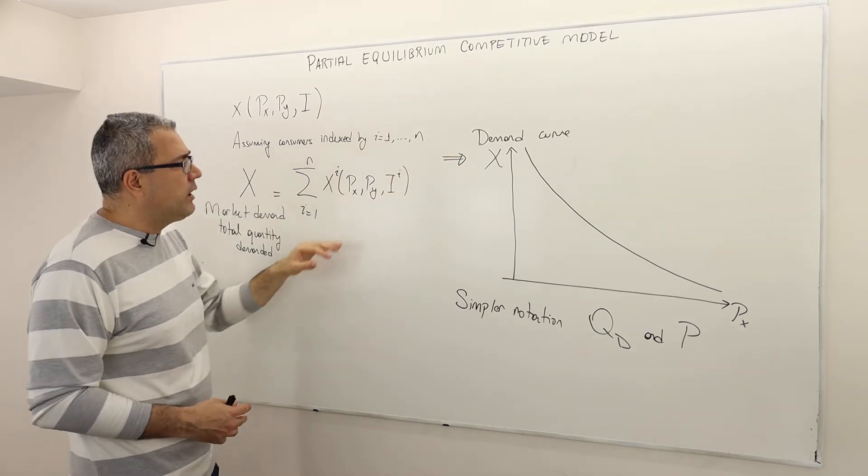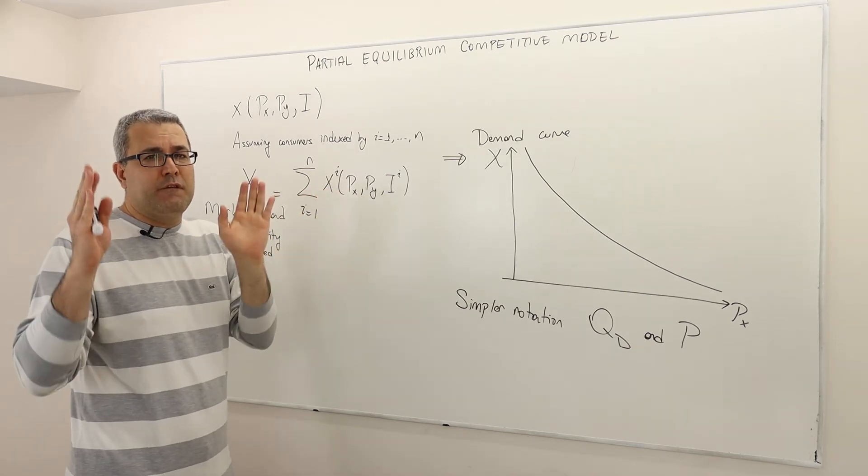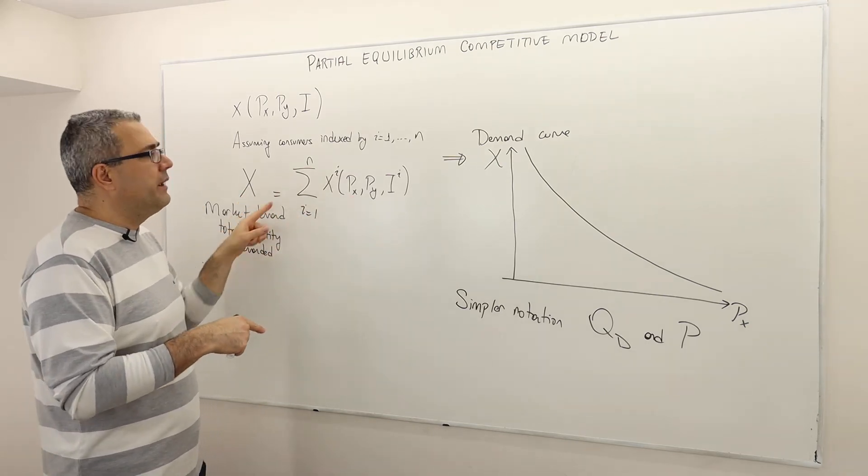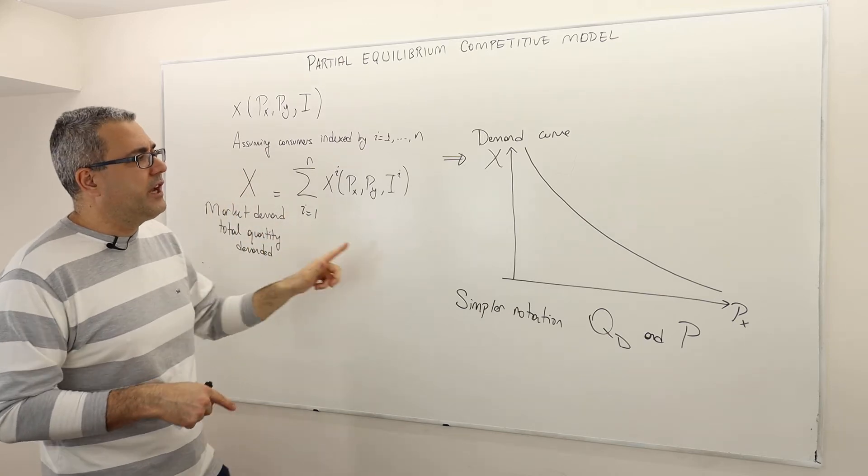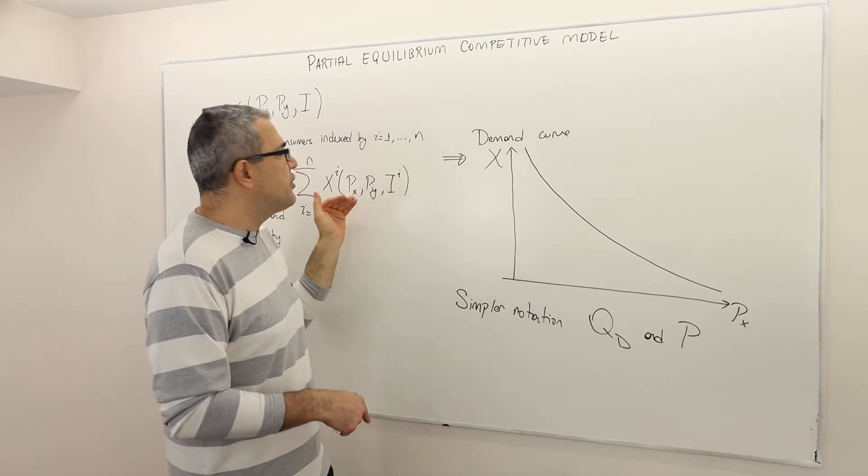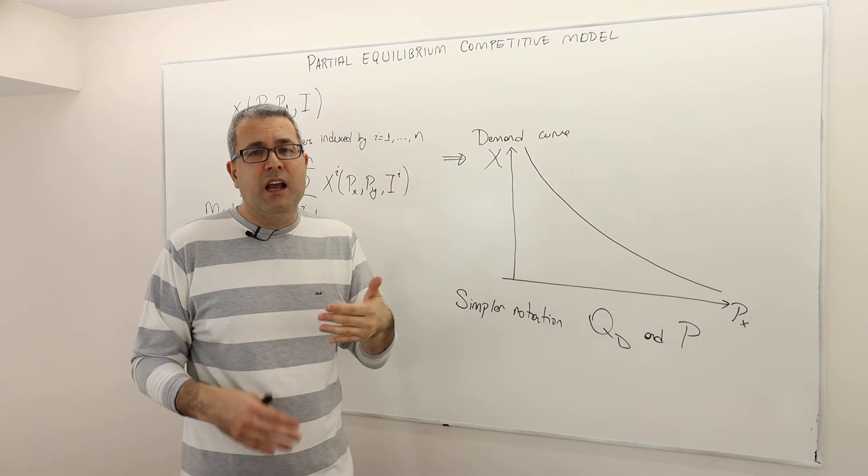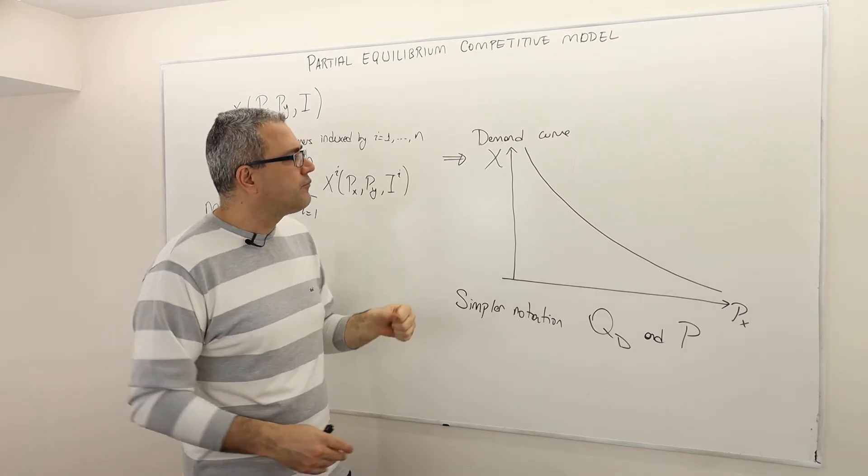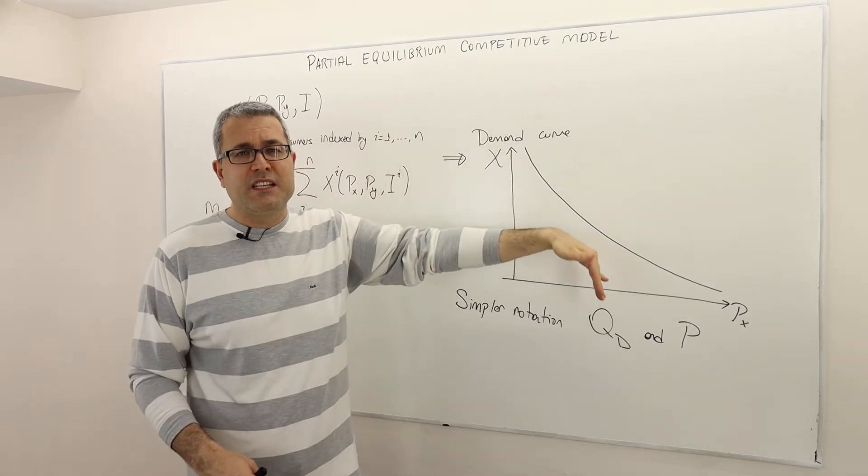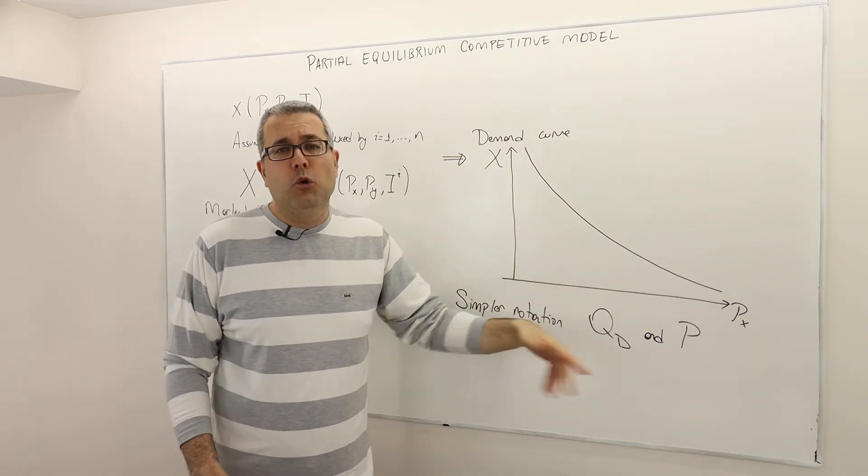The idea is the following. We keep the price of good Y and the income distribution fixed. And then for any PX level, we determine how the market demand is going to change. And that is going to give us a downward sloping demand curve if for each individual, this good is a superior good, meaning higher prices means lower demand. Therefore, the demand curve is not necessarily going to be a downward sloping straight line. Straight line is just for simplification, but it's going to be a downward sloping curve.